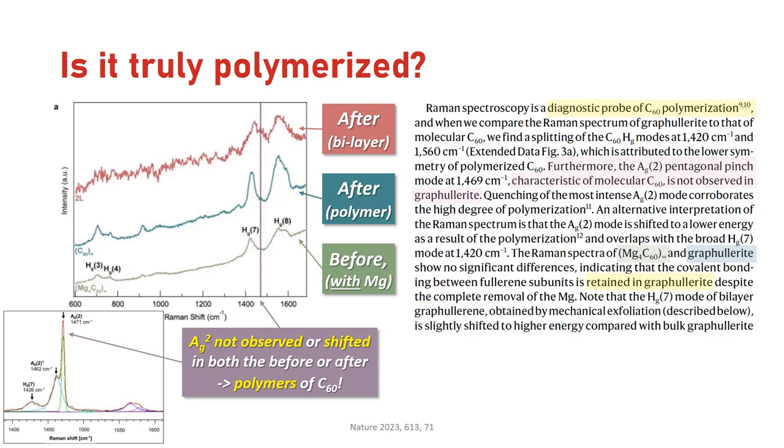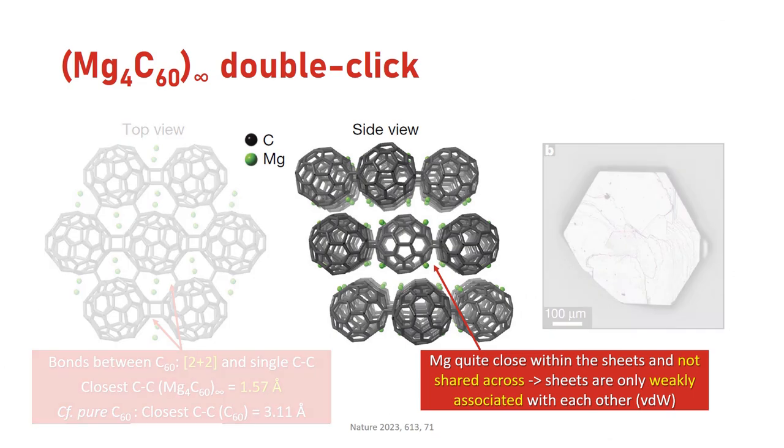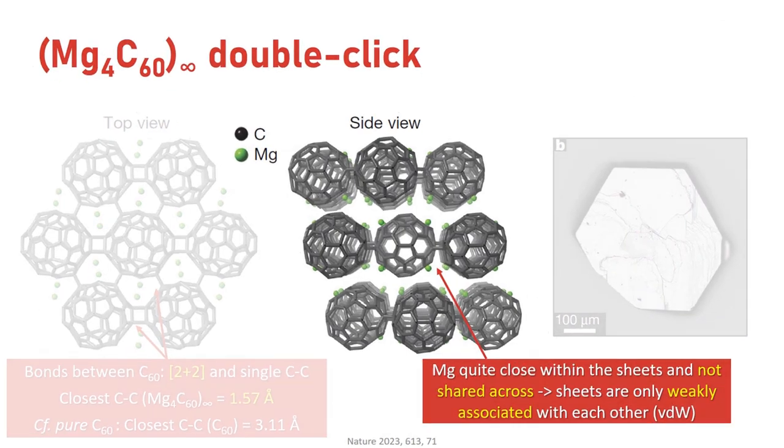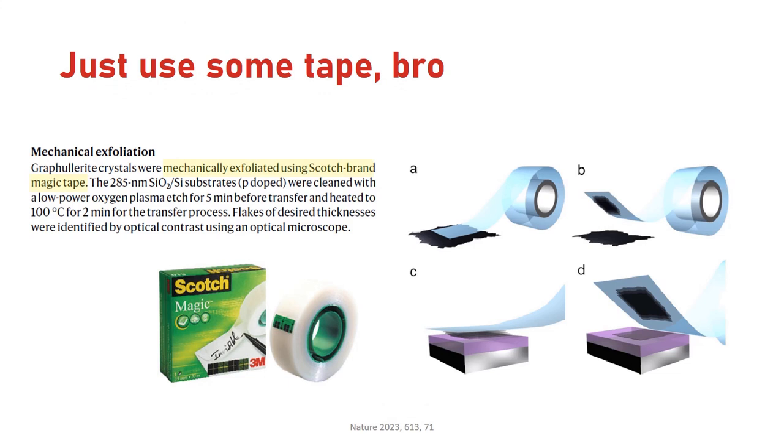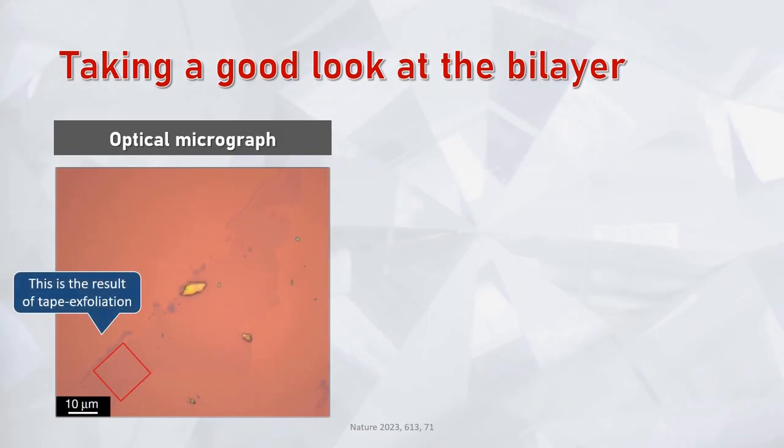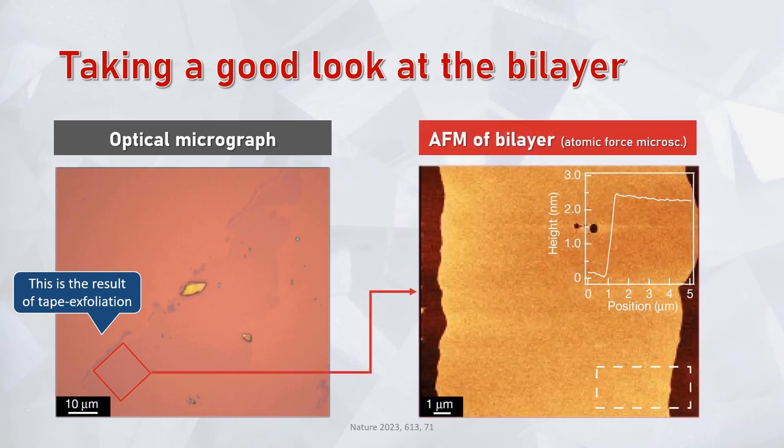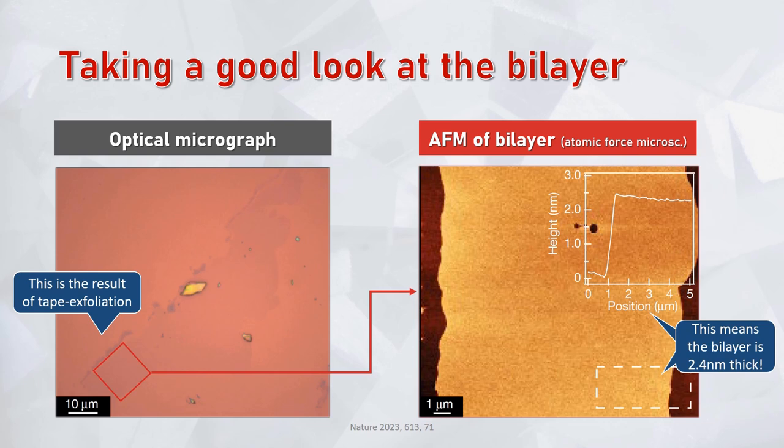And if you remember, they did not see any interlayer C-C covalent bonds. This means the next logical step was to separate or exfoliate the crystal layers. This can be literally done with sticky scotch tape and reliably gave very thin flakes consisting of only two graphfullerene layers. Here you can see the optical micrograph, so basically a picture taken with a microscope, and the atomic force microscopy image of the bilayer in the red rectangle. The bilayer turns out to be roughly 2.4 nanometers thick. Oh and by the way, feel free to pause the video in the coming minutes to digest the pictures and content without pressure.